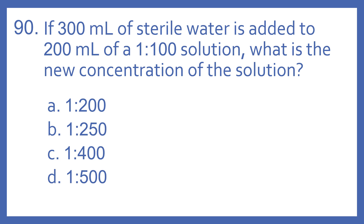Number 90. If 300 milliliters of sterile water is added to 200 milliliters of a 1 to 100 solution, what is the new concentration of the solution? A. 1 to 200. B. 1 to 250. C. 1 to 400. Or D. 1 to 500.